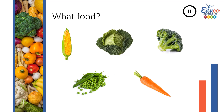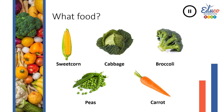What other foods do you know? Pause the video and write the correct food names. Did you write the correct names? Let's find out. Sweet corn. Cabbage. Broccoli — can everyone repeat: broccoli. Carrot. Peas. Did you get them all correct? Well done.